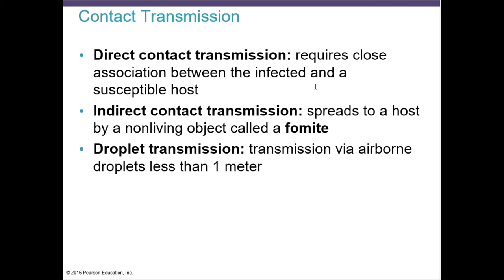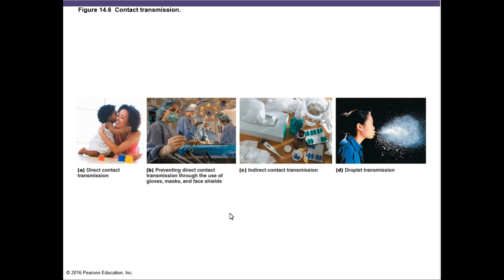Droplet transmission is when airborne droplets travel less than a meter. For example, during coughing, sneezing, laughing, or talking, you can transmit influenza, pneumonia, whooping cough, and COVID-19. To prevent direct contact and droplet transmission, the use of gloves, masks, and face shields are highly effective.